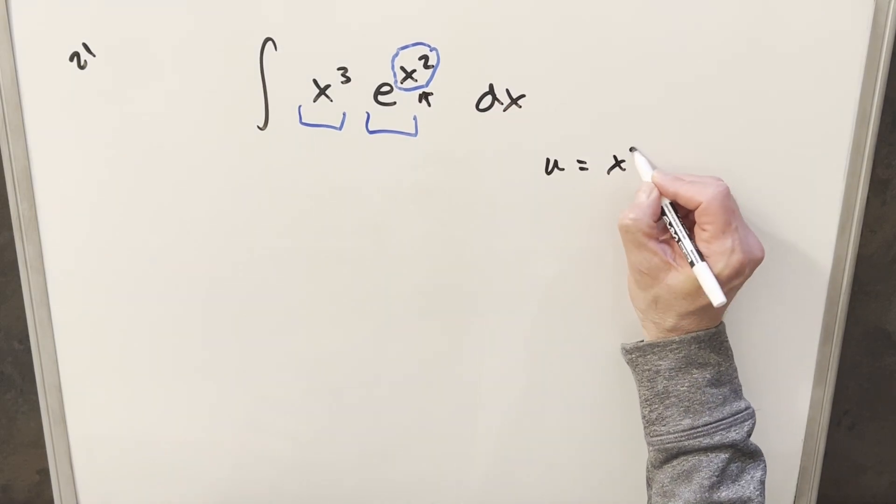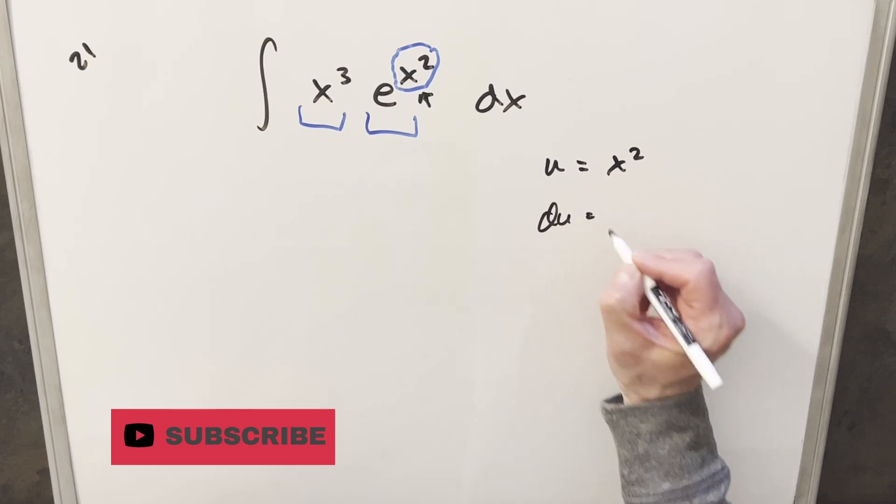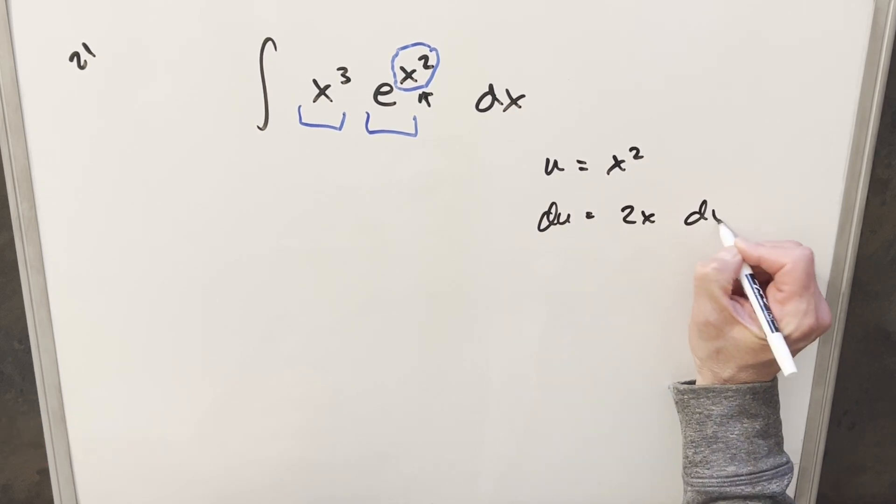So for my u, we'll just make that x squared, because we want to have e to the u. And then I'll take a derivative, so our du value is just going to be 2x dx.